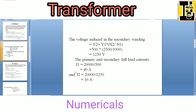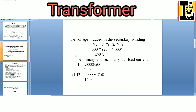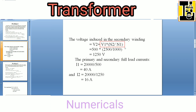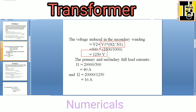Let us solve for the voltage induced in the secondary winding. By means of the transformer ratio formula, we have V2 by V1 is equals to N2 by N1. As we need to calculate V2, that is V2 is equals to V1 into N2 by N1. Substituting the values, we get V2, the secondary induced voltage, as 1250 volts.